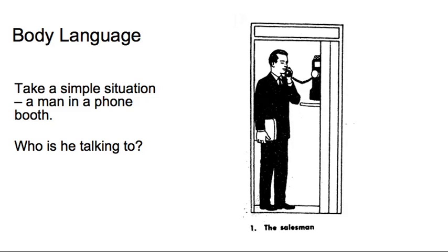Let's take an example of a man talking in a phone booth. Who's this chap talking to? We can see in the caption underneath it's the salesman. That's because he's just talking on the phone. There's no intimacy here. It's a businesslike conversation.